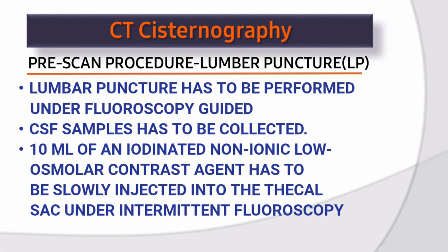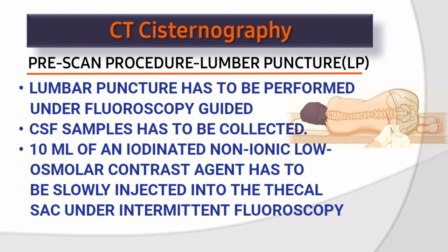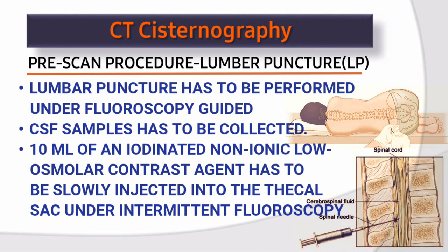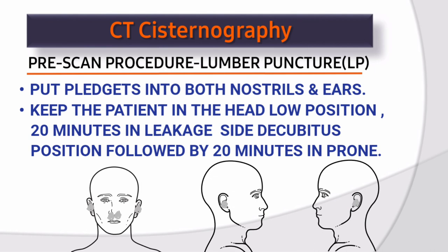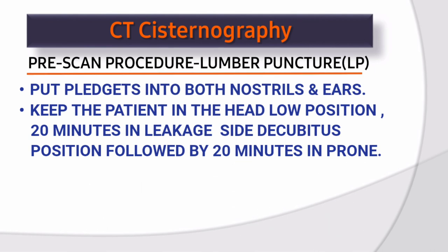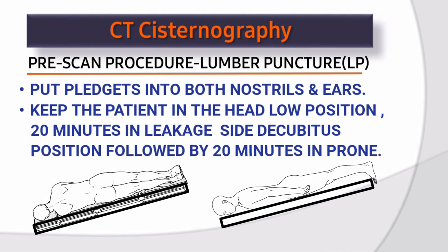Pre-scan procedure: lumbar puncture (LP). Lumbar puncture has to be performed under fluoroscopy guidance. CSF samples are to be collected. 10 ml of non-ionic low osmolar contrast agent has to be slowly injected into the thecal sac under intermittent fluoroscopy. Put pledgets into both nostrils and ears. Keep the patient in the head-low position — 20 minutes in the leakage-side decubitus position, followed by 20 minutes in prone.